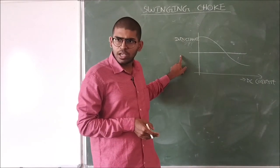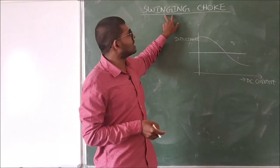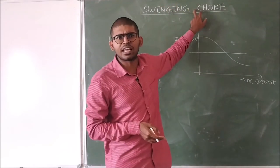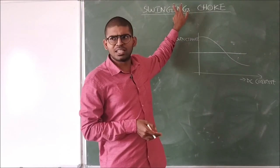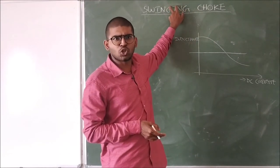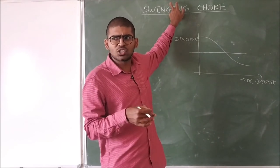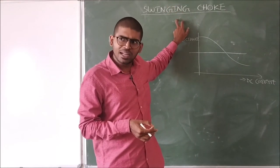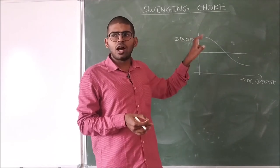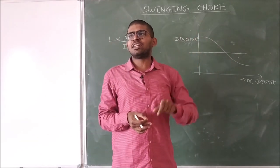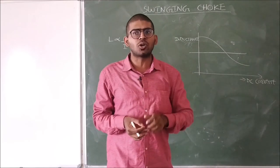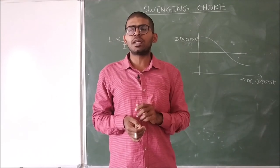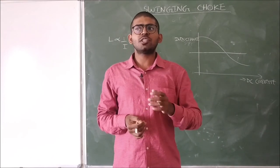In this class we have discussed about the swinging choke. The swinging choke means its inductance value changes. A swinging choke is an inductor. Why we call it a swinging choke — swinging means something is changing, specifically the inductance value. The inductance value is changing with respect to the applied DC current. The line harmonic current reduction is superior in the swinging choke, and the efficiency of the swinging choke is better than the normal choke.